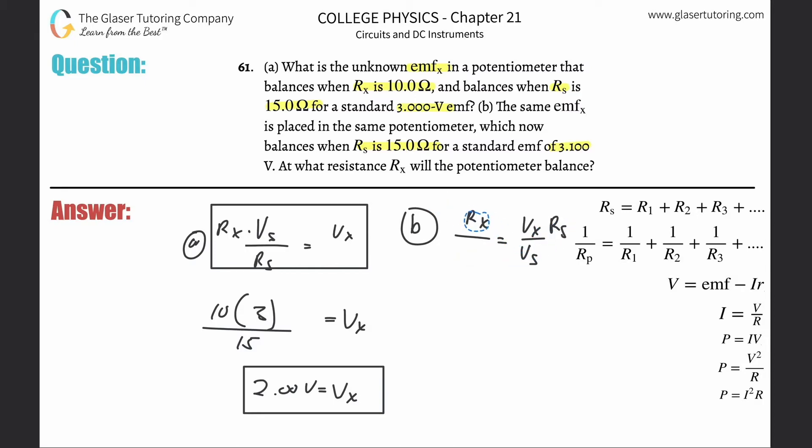There's the formula: R sub x is equal to V sub x, which they told us now is the one that we're going to use from the prior problem, so 2, multiplied by R sub s, they said that's 15, divided down by 3.1, which is the standard voltage.